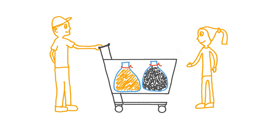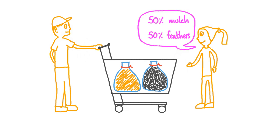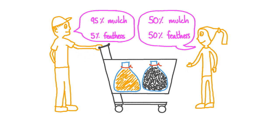Let's introduce this topic with a simple story. Two friends go shopping to buy mulch for the garden and feathers to fill up some homemade pillows. They place one large bag of each in the shopping cart, nearly filling it. One friend says the cart is made up of 50% mulch and 50% feathers because they each take up half of the space. The other friend pushing the cart says the cart is 95% mulch and 5% feathers because there are many more kilos of mulch than kilos of feathers.